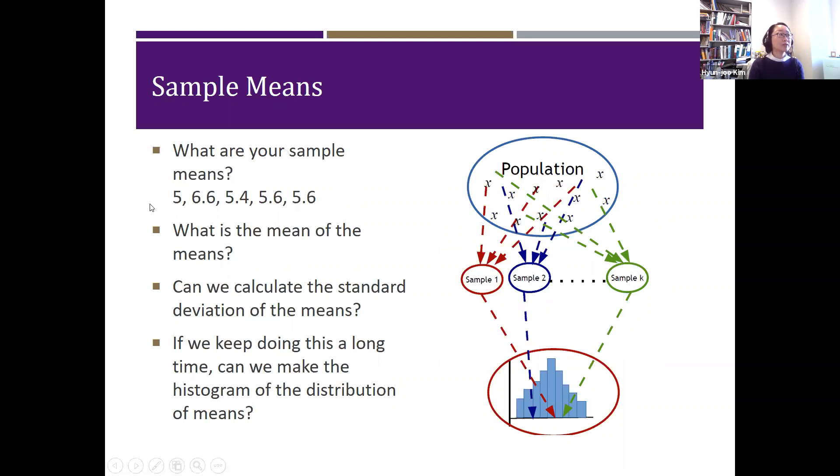For example, for my previous sample, I have these five means. So I did my homework and I have 5, 6.6, 5.4, 5.6, and 5.6. And again, my fourth number and fifth number are exactly same. This is what it's meant to be. This is totally accidental. So I have five numbers. Again, another different way to represent: here's your population, you have one sample, two samples, and sample K.